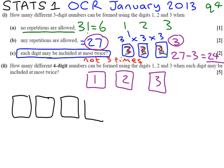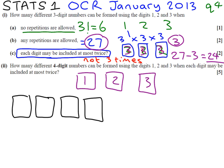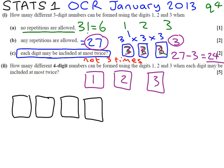Now if you think carefully, if you're using three different numbers, one, two and three, to make up a four digit number, one of them is going to have to be repeated at least once.